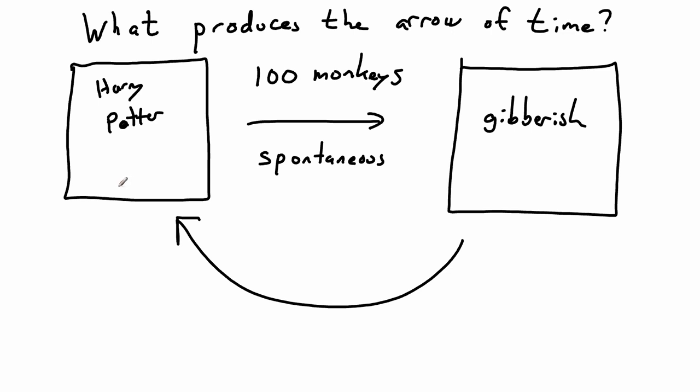So we have to come up with a reason. Why does this not happen? Why does this process not happen, and the other process is spontaneous? We have to come up with some sort of hypothesis. So one hypothesis would be, monkeys just like Harry Potter. Well, that's obviously nonsense. So there must be some other reason, and the reason for this is just the laws of probability.